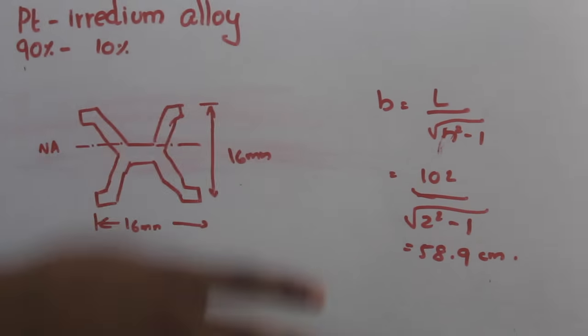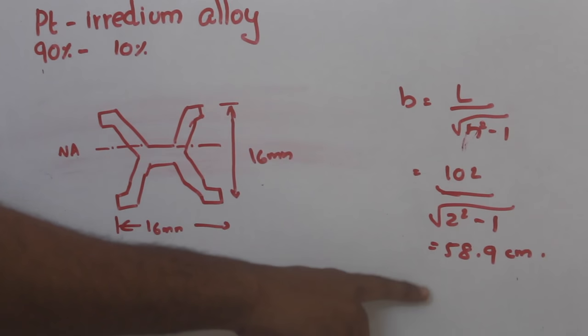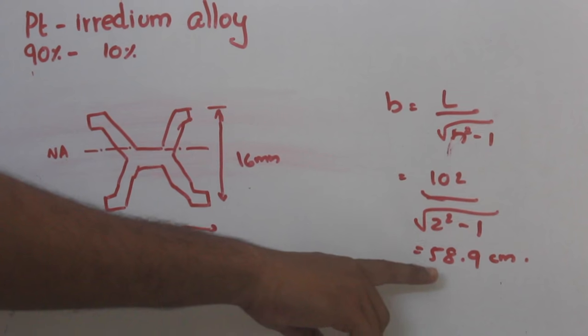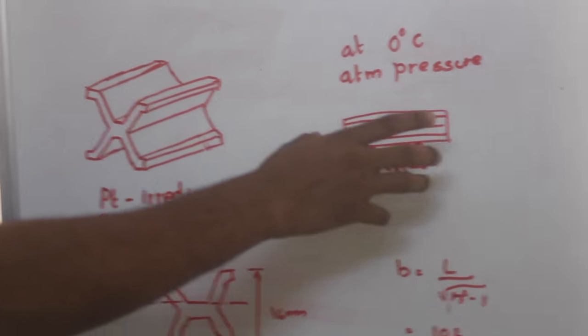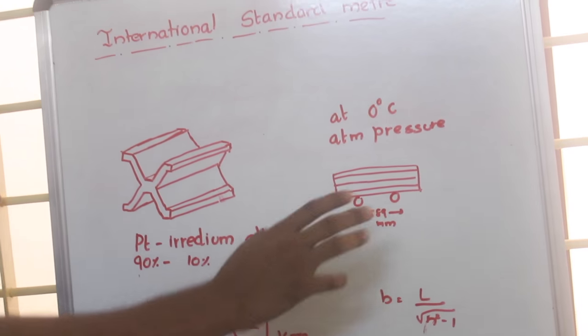Let the number of support be 2. Here we are substituting it, so we will get 58.9 centimeter. The distance between the support should be 58.9 centimeter.